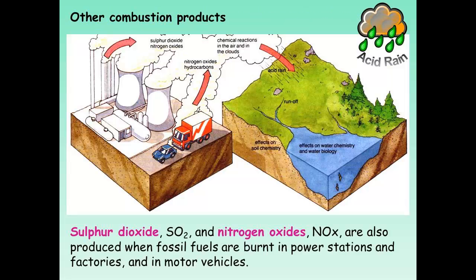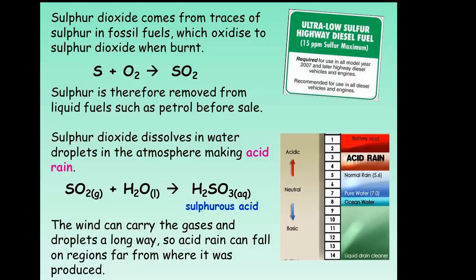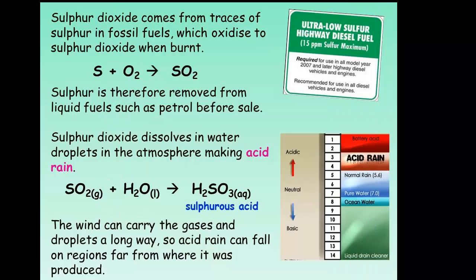Due to the impurities in some fuels, for example sulphur, and due to the presence of nitrogen in the air and the high temperatures inside of internal combustion engines or in the furnaces of power stations, we can form other oxides other than carbon dioxide and water when combustion takes place. We can also form sulphur dioxide and nitrogen oxides. So the sulphur burns in the oxygen to form sulphur dioxide, which then dissolves in droplets of rainwater to form sulphurous acid, H2SO3. This can be carried long distances in the wind and therefore can affect countries or areas far away from the original source of the sulphur dioxide. A lot of sulphur dioxide is removed from fuel before it's put on sale.